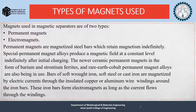The types of magnets used in a magnetic separator are mainly of two types: permanent magnets and electromagnets. Permanent magnets are magnetized steel bars which retain magnetism indefinitely. Special permanent magnet alloys produce a magnetic field at a constant level indefinitely after initial charging. The newer ceramic permanent magnets in the form of barium and strontium ferrites and rare earth cobalt permanent magnet alloys are also being used.